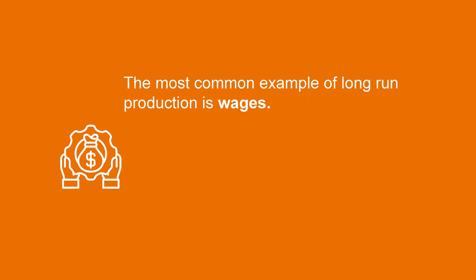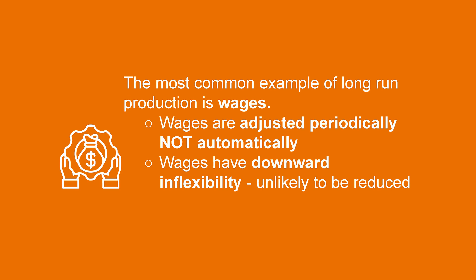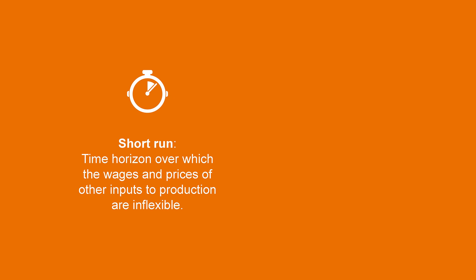In other words, the cost of each factor of production used to produce a final good or service is more inflexible in the short term than the price of the final good itself. The most common example is wages. Wages are the payment for labour, which is an input used for most final products. Wages have two main qualities: they are adjusted periodically and not automatically, and they have downward inflexibility, which means as they adjust, they are unlikely to be reduced.